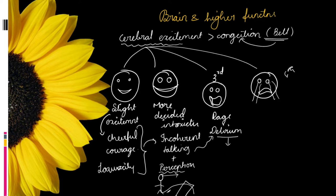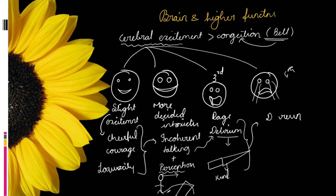Delirium is a confused state of mind. In this stage, Babu attempts to injure himself with a knife. Once this is noticed, he needs consolation. Finally, he ends up crying in depression with a lot of confusion. These are the four stages of intoxication seen with Agaricus.